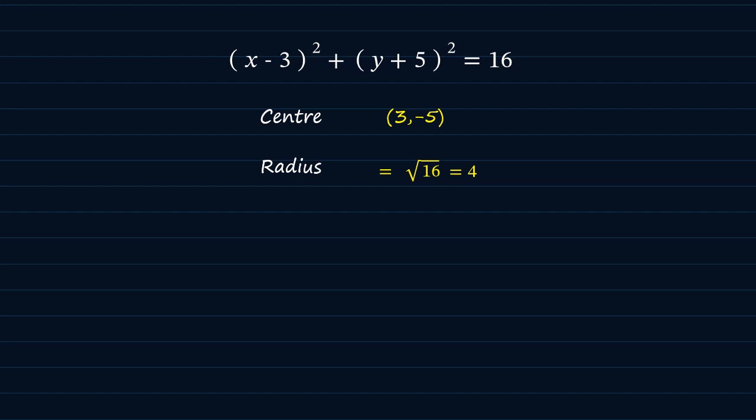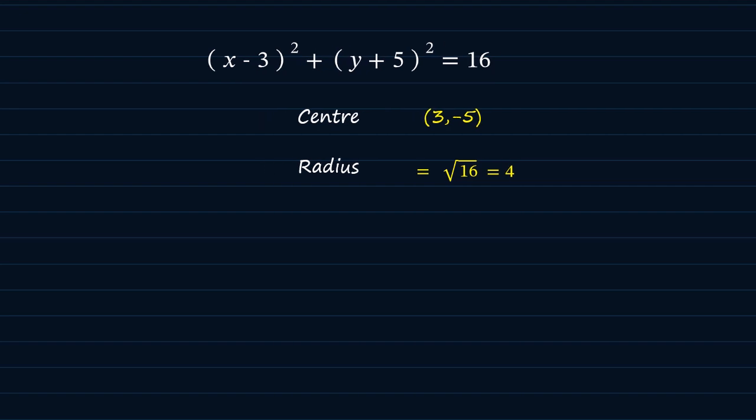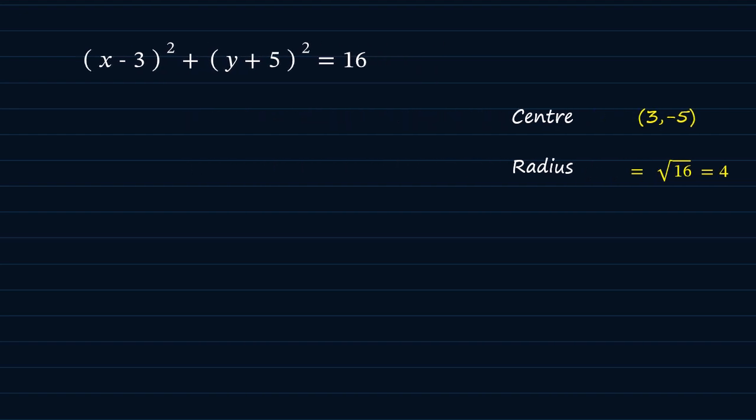But let's say we are to expand this equation. What would we get? So by expanding x minus 3 squared, we get x squared minus 6x plus 9, and by expanding y plus 5 squared, then we get y squared plus 10y plus 25. And all this is equal to 16.